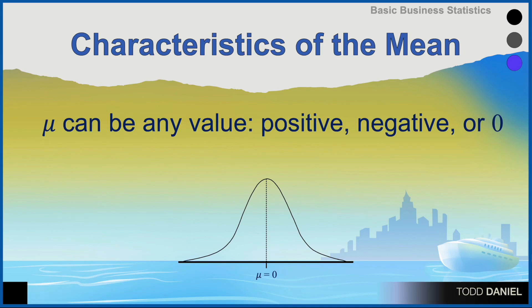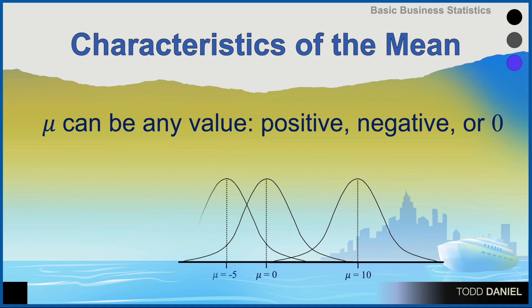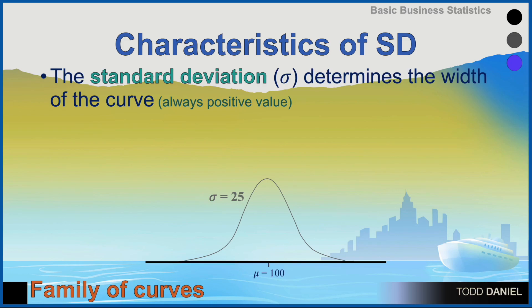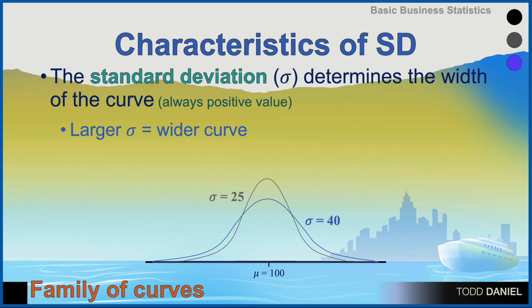The mean of a normal curve could be any value — it could be positive 10, negative 5, or simply 0. So we talk about normal curves not as a single curve, but a family of curves based upon the standard deviation. The standard deviation determines the width of the curve and will always be a positive value because it is the square root of the variance. A larger standard deviation (sigma) indicates a wider curve, while a smaller sigma indicates a narrower curve, regardless of the mean of that distribution.